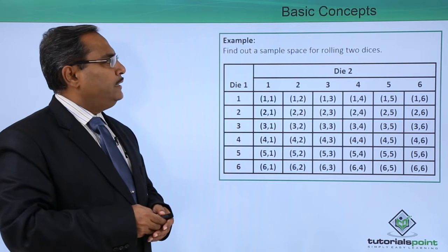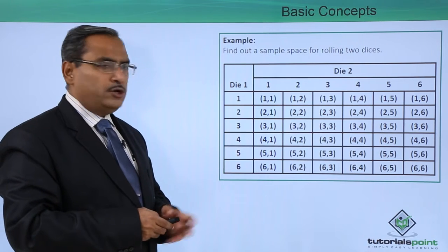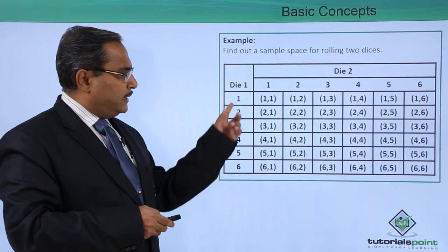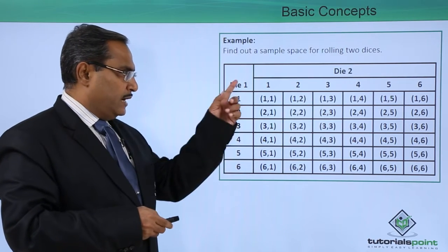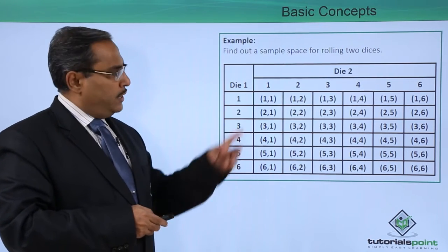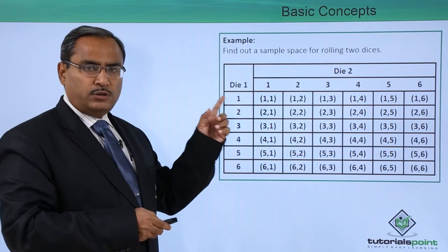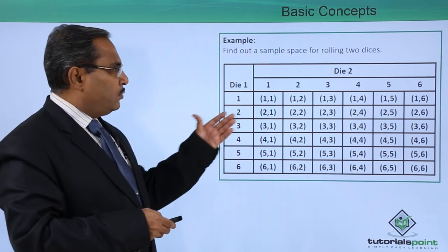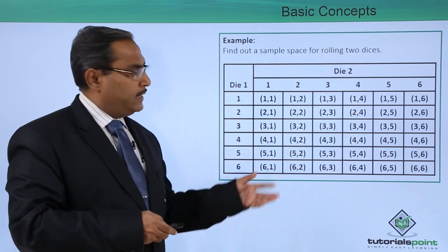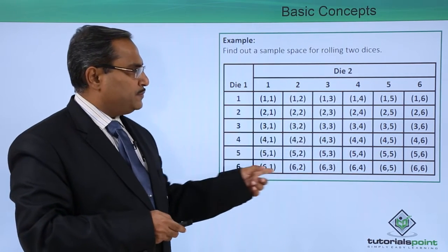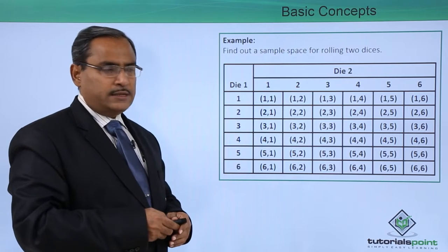Let us suppose another example: find out the sample space for rolling two dice. In that case, you can consider die 1, it has got a sample space like this, and if you consider die 2, it has got a sample space like 1, 2, 3, 4, 5, 6. If you find the sample space of rolling two dice, this is the respective sample space for rolling two dice.